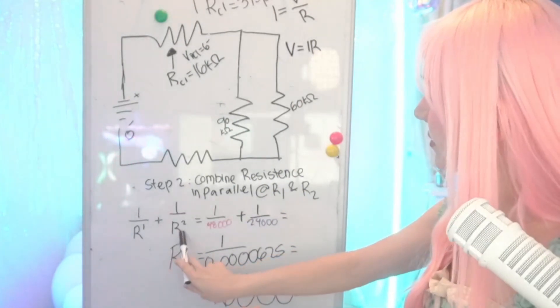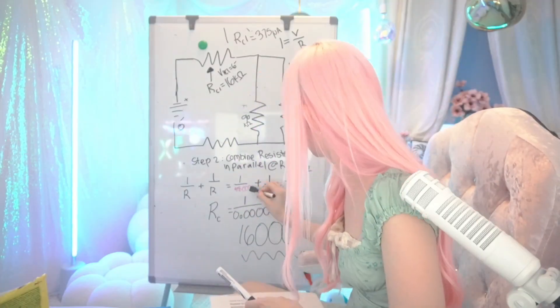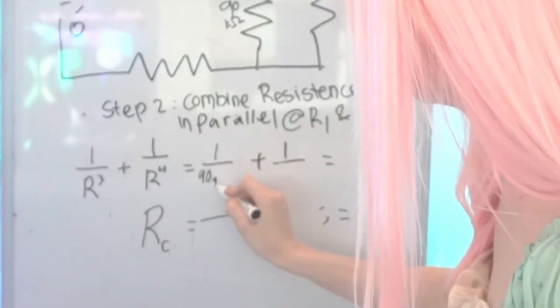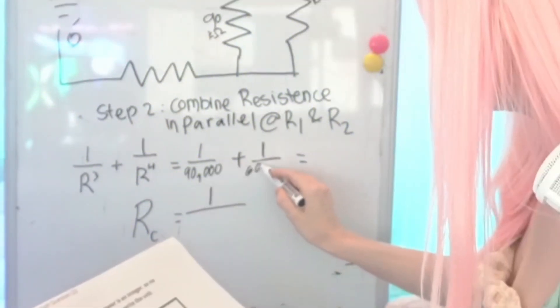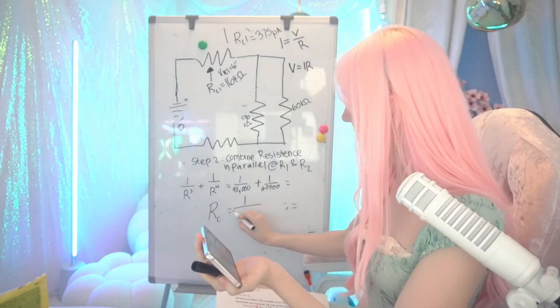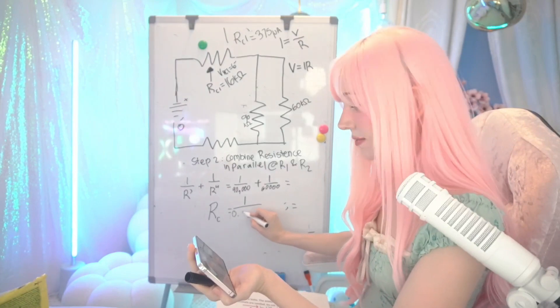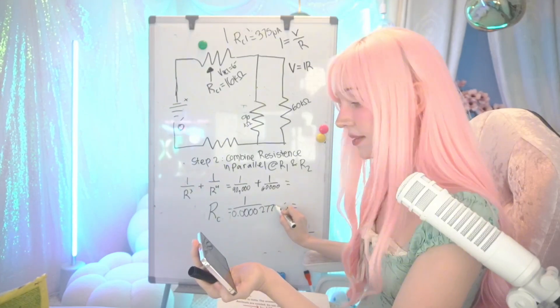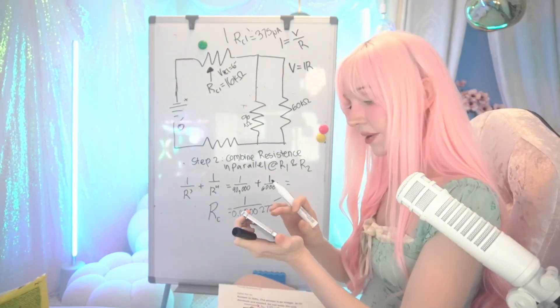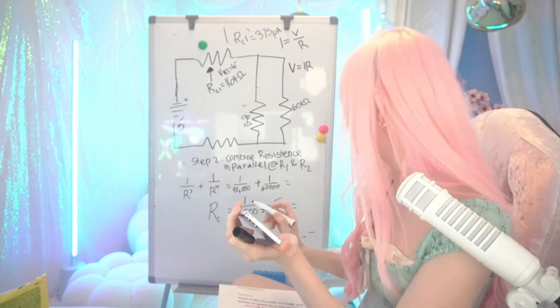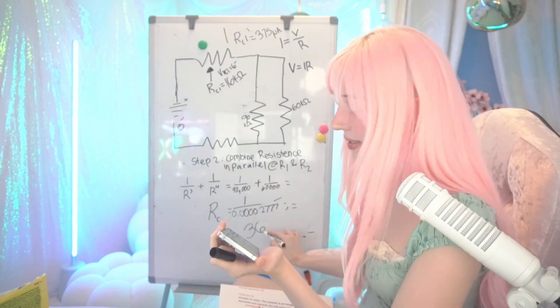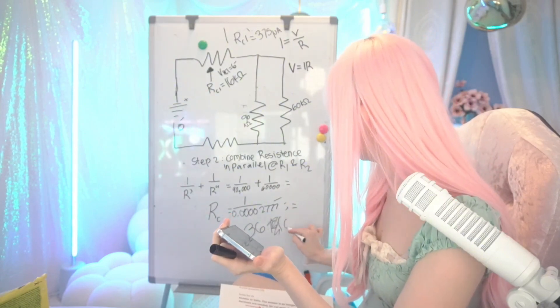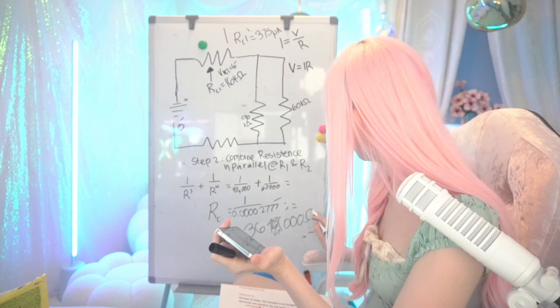So that's R1, R2. Actually, this is R3 and R4. Because we already have the equation, it's going to be 90,000, 60,000. And our answer is 0.000027777. I sound like a robot now. Now I got to plug that in and solve for 1 over that, which is going to equal 36,000. I'm just going to round that to 36,000 ohms.